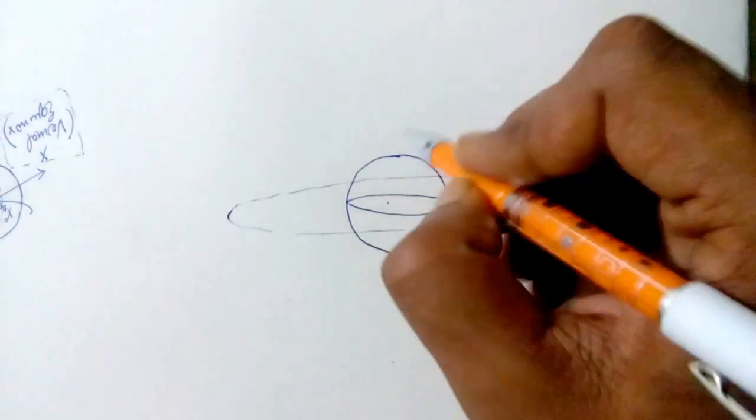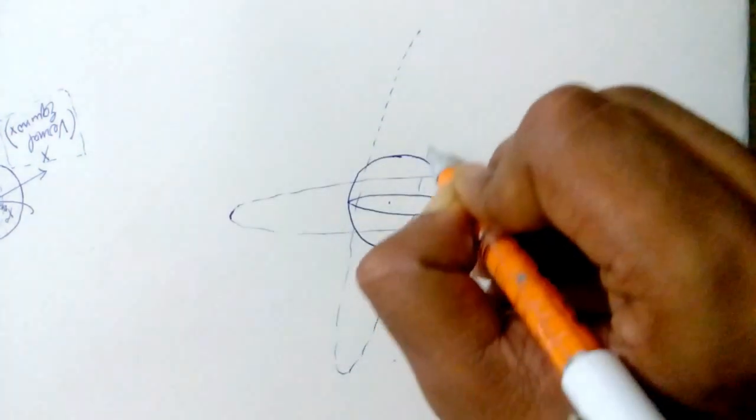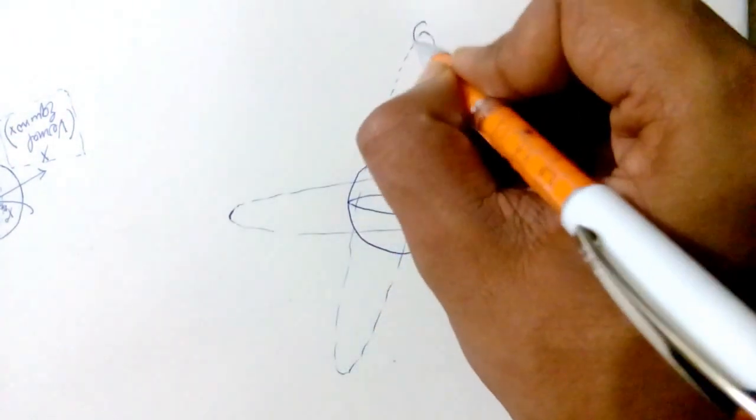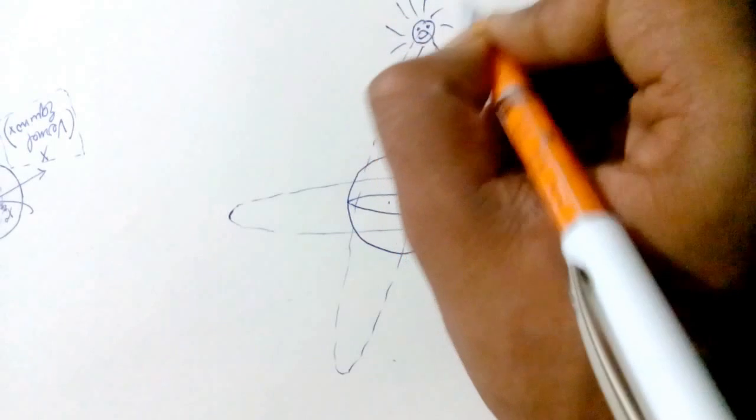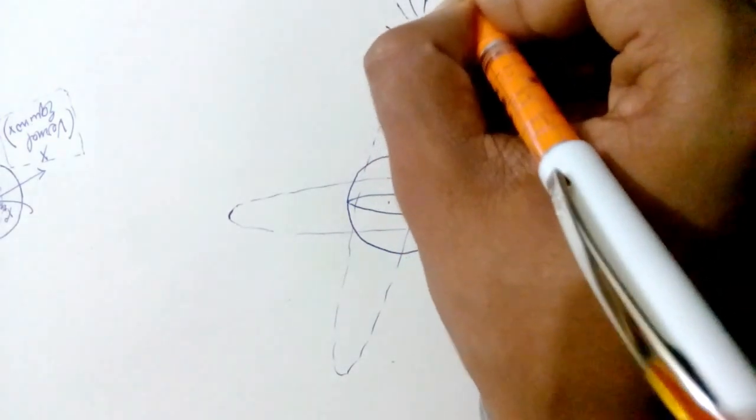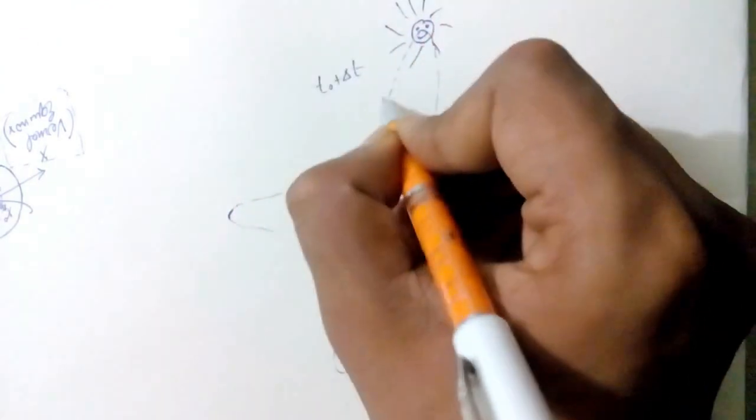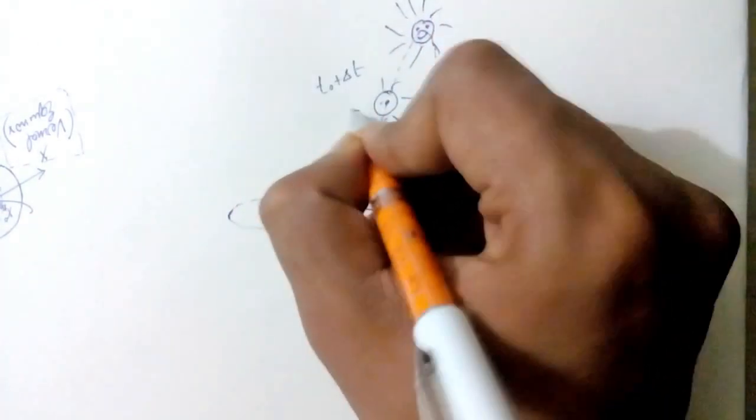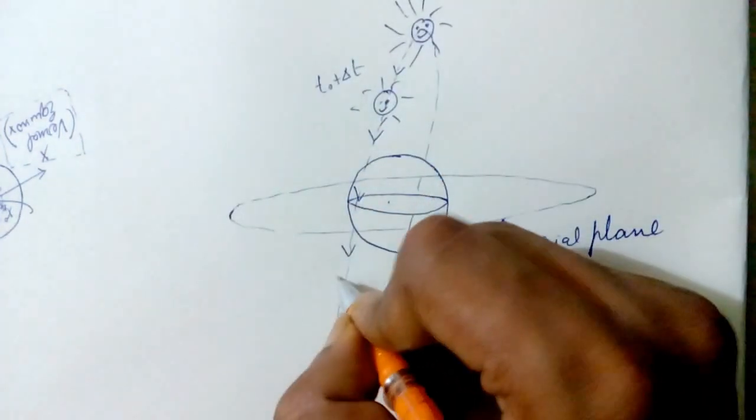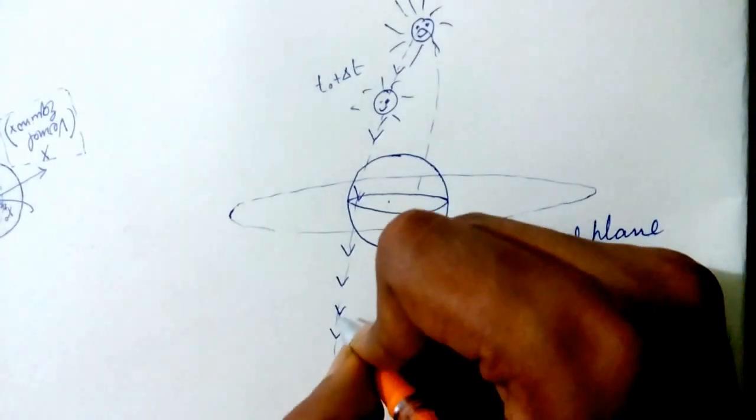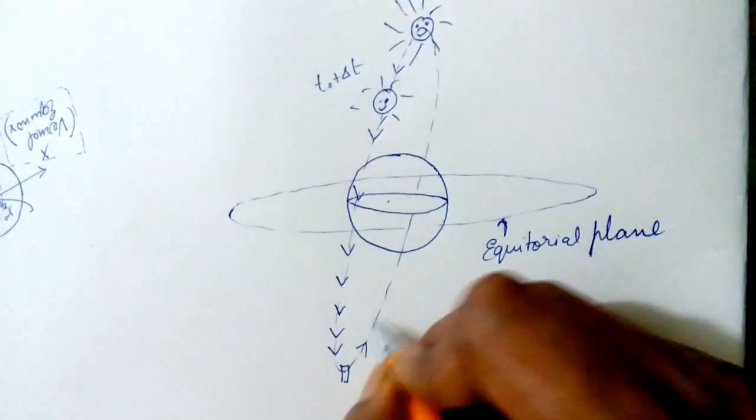Now if you observe from the Earth, then the sun will appear to orbit the Earth somewhat like this. If this is the position of the sun at time t0, then at time t0 plus delta t, this will be the new position of the sun. So it will keep on going like this. It will come down and down and down again, and then it will stop descending at this point.